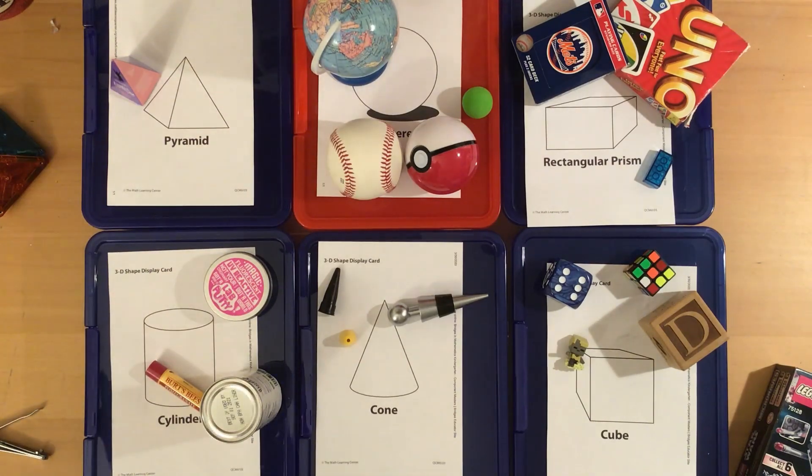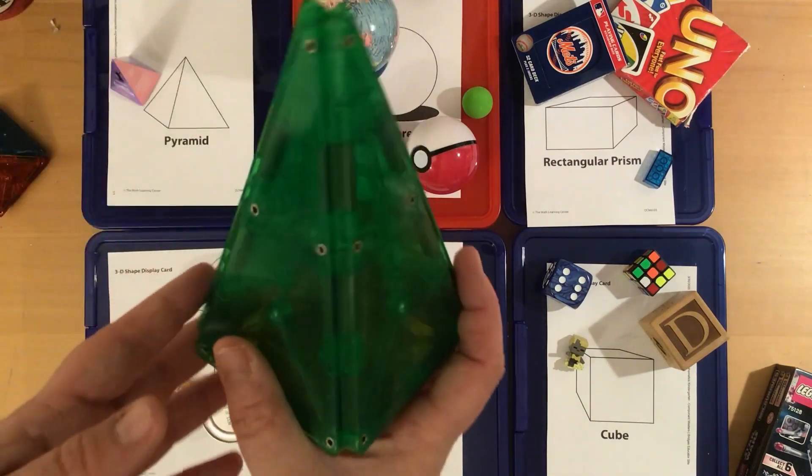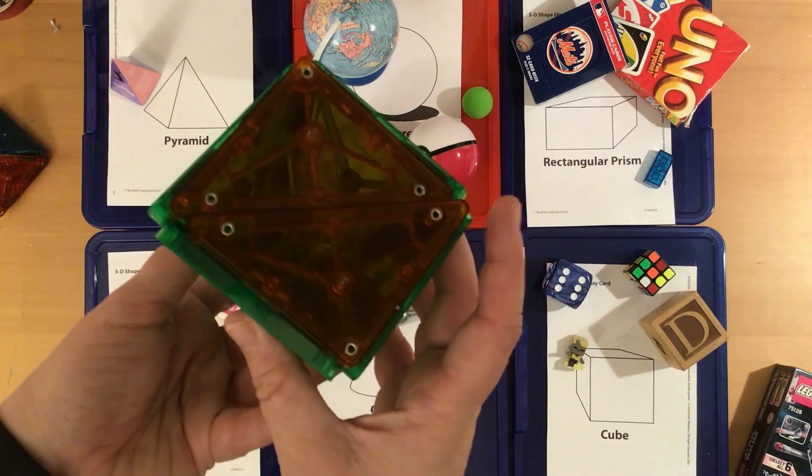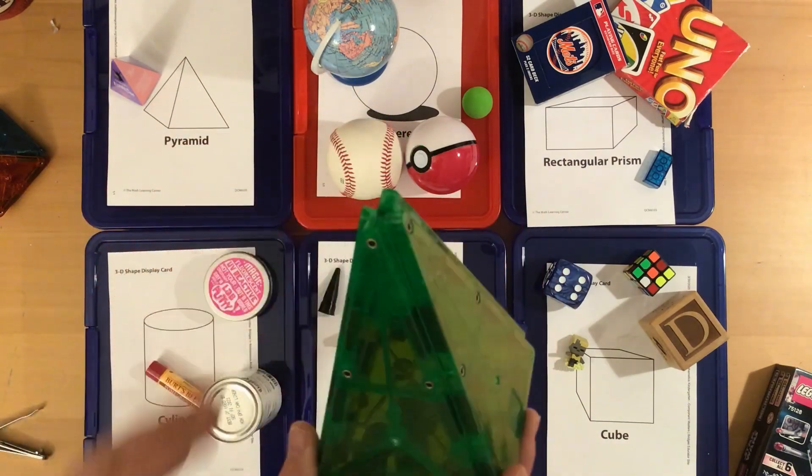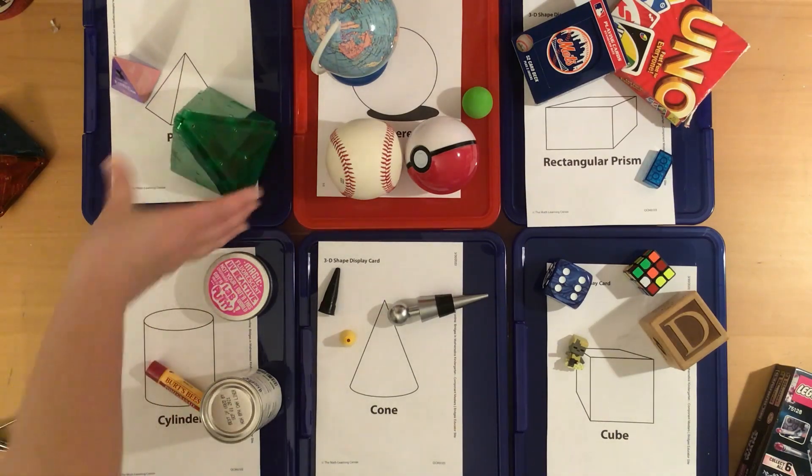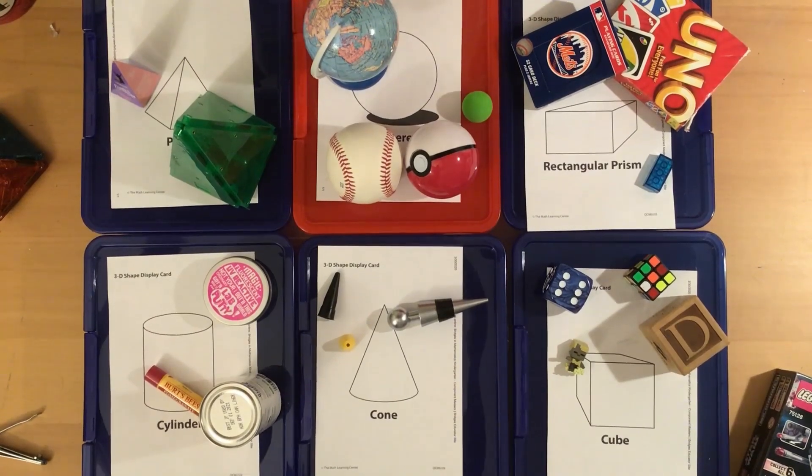And I have one more. I see flat triangle faces and a square at the bottom. Where should that go? That's right. It's a pyramid. Great sorting.